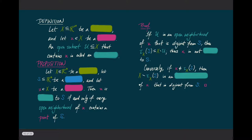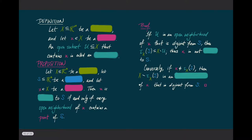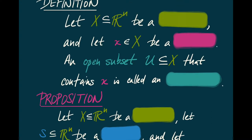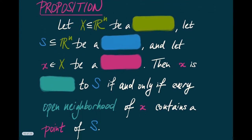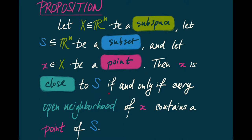An important concept in topology is the idea of an open neighborhood of a point. Here's the definition for subspaces of Euclidean space. Let X in R^n be a subspace, and let x be a point of X. An open subset of X that contains our point is called an open neighborhood. This is a useful definition because it gives us an easy way to recognize when points are close to subsets of X. A point x is close to a subset S if and only if every open neighborhood of x contains a point of S.